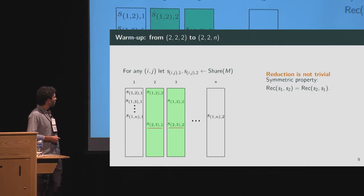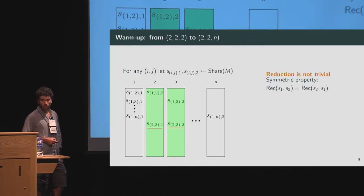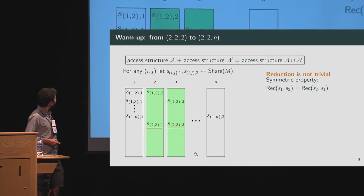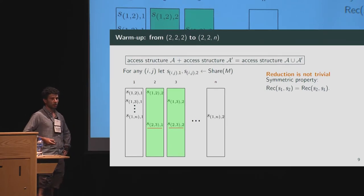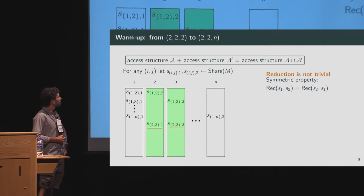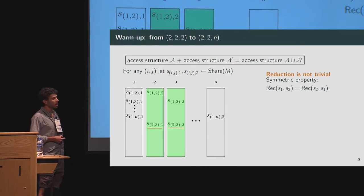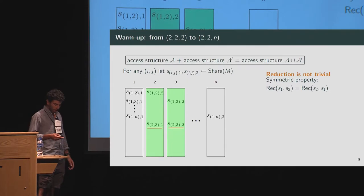This illustrates a basic principle of secret sharing composition: if one secret sharing has access structure A and another has access structure A', then composing them by stacking rows gives a secret sharing with access structure equal to A union A'. This is a fundamental principle to keep in mind.